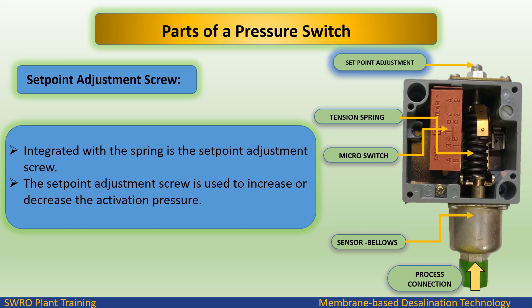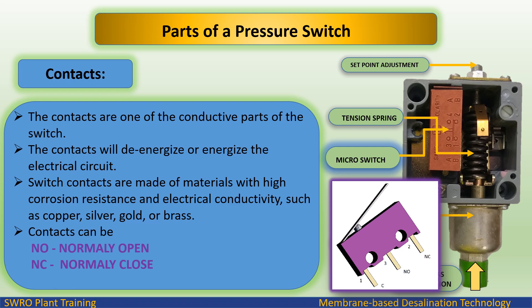Set point adjustment screw. Integrated with the spring is the set point adjustment screw, which is used to increase or decrease the activation pressure. The contacts are one of the conductive parts of the switch; they will de-energize or energize the electrical circuit. Switch contacts are made of materials with high corrosion resistance and electrical conductivity, such as copper, silver, gold, or brass.